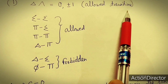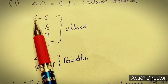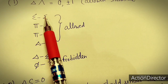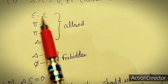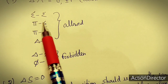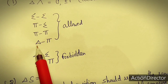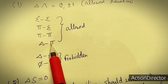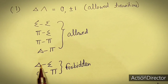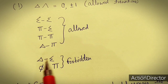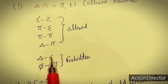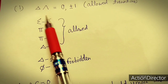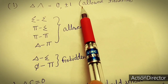Transitions such as delta→sigma are forbidden because the lambda values are 2 and 0, giving a difference of 2. Only transitions where ΔΛ = 0 or ±1 are allowed. The second selection rule is the spin selection rule: ΔS = 0, meaning the multiplicity of transitions must remain the same, as in transition metal complexes.